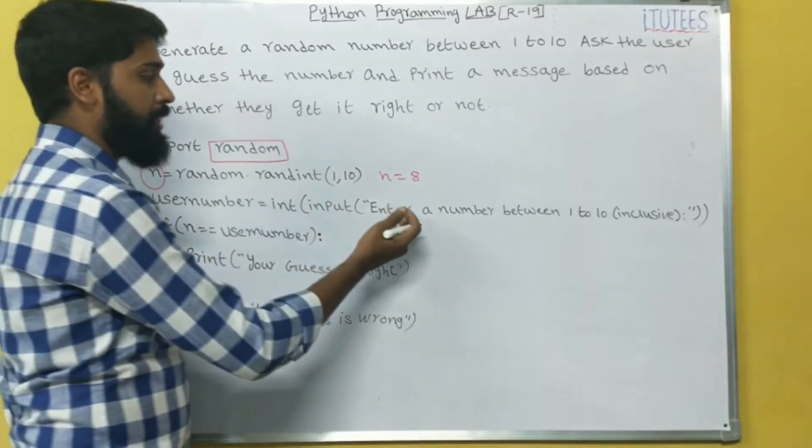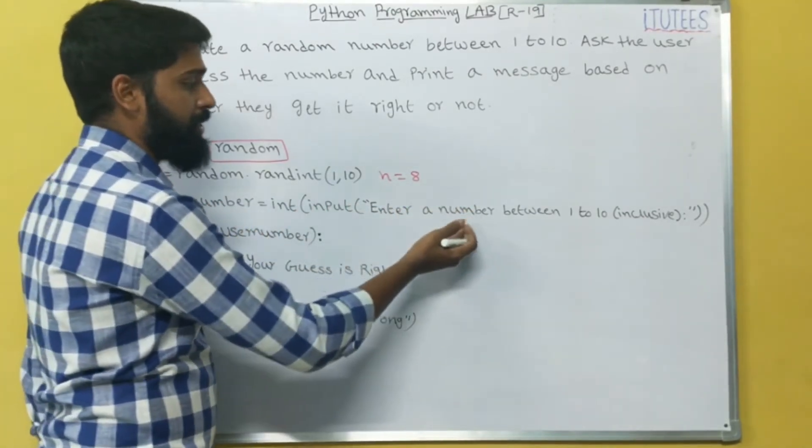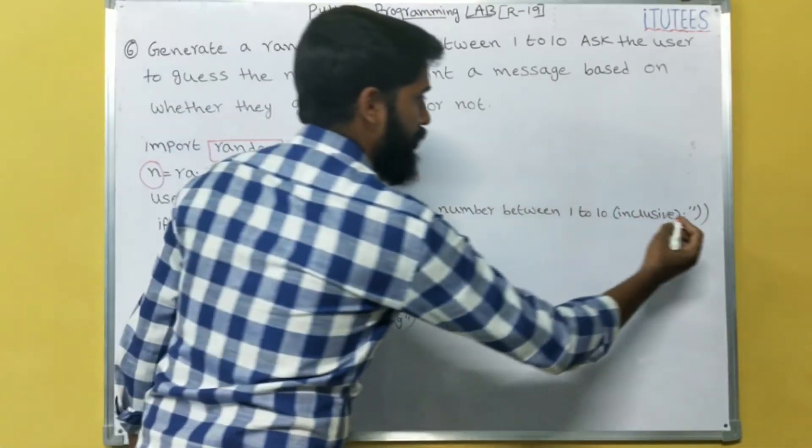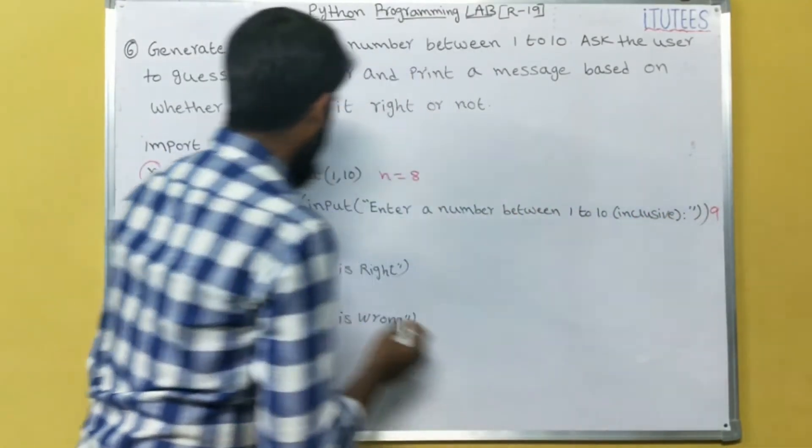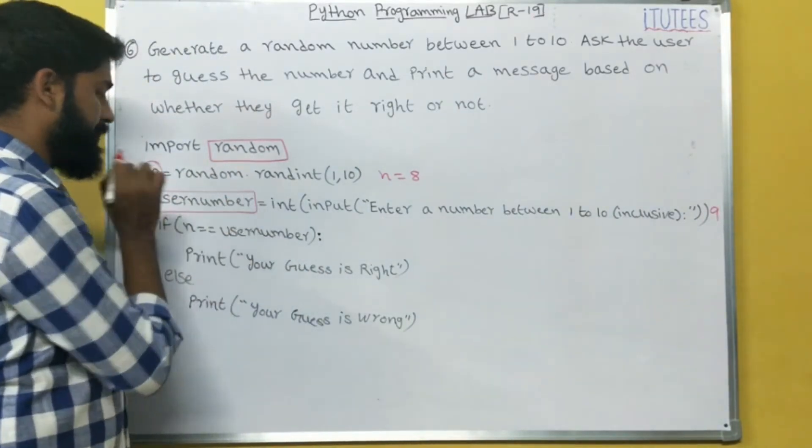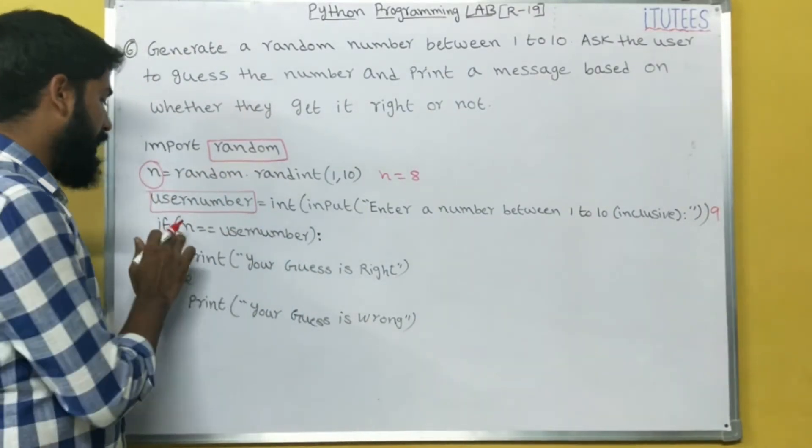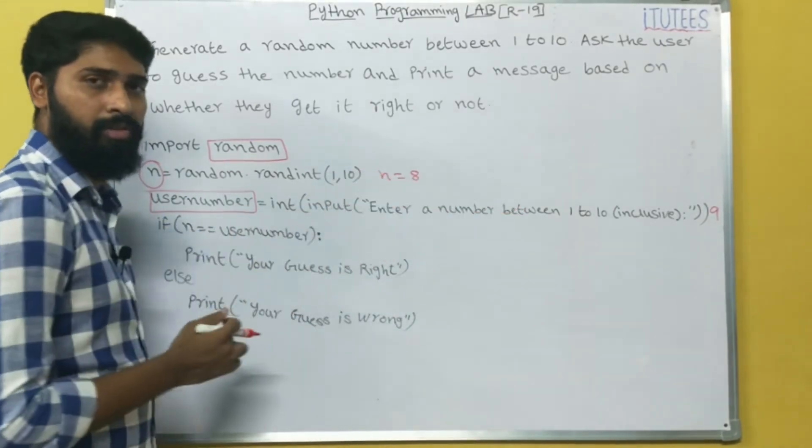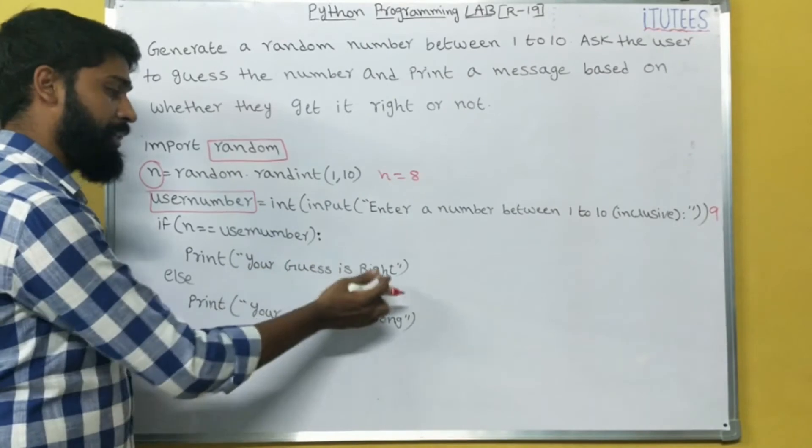User number equals to int input, it displays a message enter a number between 1 to 10 and that is inclusive. For example, the user enters 9. That is stored in user number variable. Here we are going to check if n equals to user number. If 8 equals to 9, then we can print your guess is right.